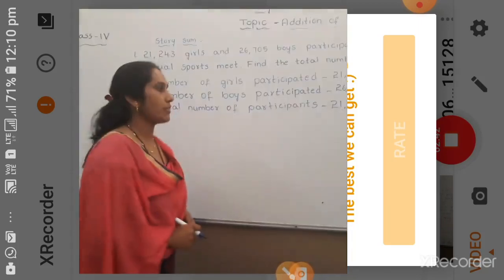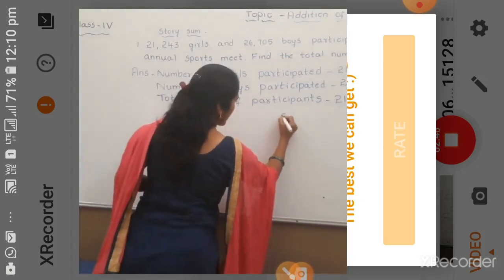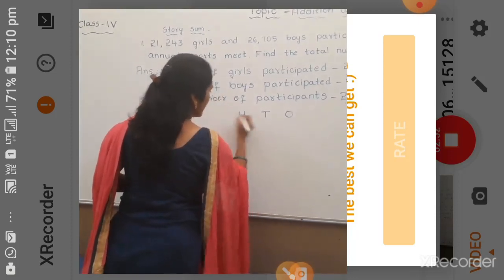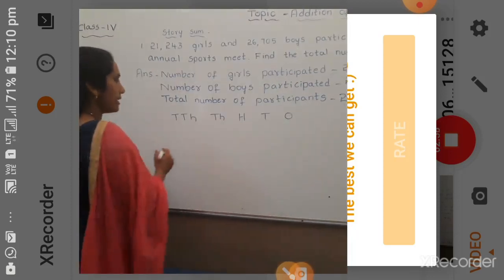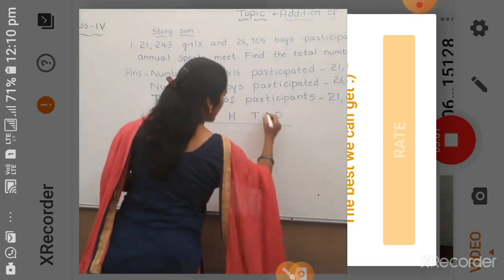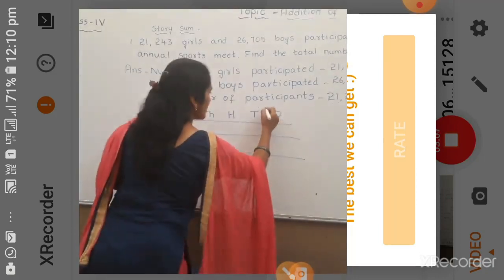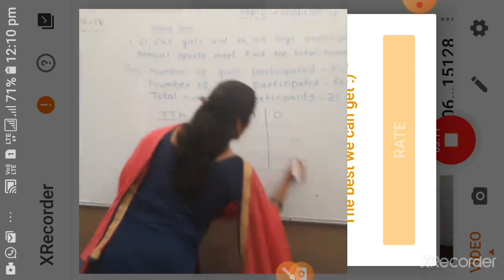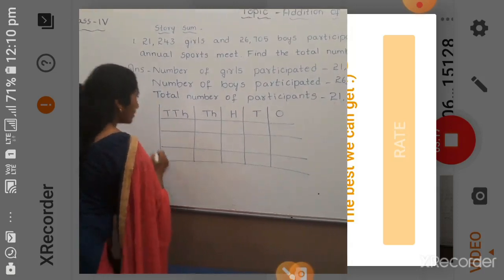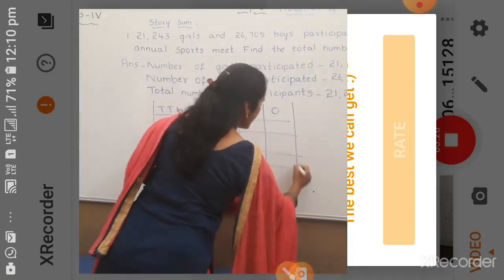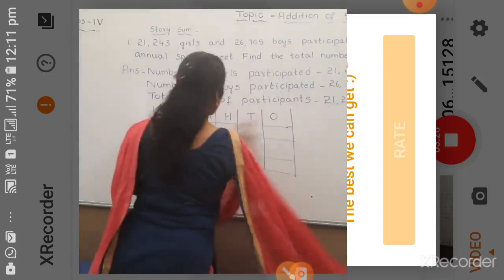Since it is a 5-digit number, it will take 5 places. So which are those 5 places? They are: 1, 10, 100, 1000, and 10,000. These are the places for a 5-digit number. So here I have written the places. Now we will arrange these numbers under these places.